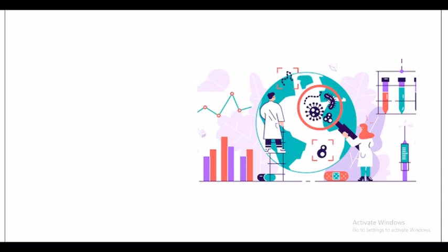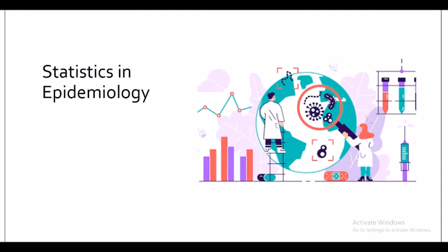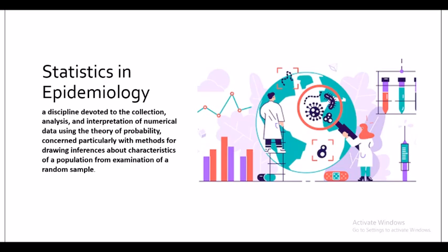Statistical signal processing utilizes the statistical properties of signals to perform signal processing tasks. Geostatistics is a branch of geography that deals with the analysis of data from disciplines such as geology, hydrogeology, hydrology, and meteorology. The use of statistics in epidemiology is a discipline devoted to the collection, analysis, and interpretation of numerical data using the theory of probability, concerned particularly with drawing inferences about population characteristics from a random sample.